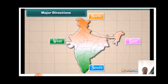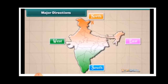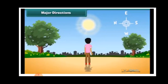Left, right, front, and back — these are the major directions. There are four main directions: north, east, south, and west. The four letters N, E, S, and W represent these directions.